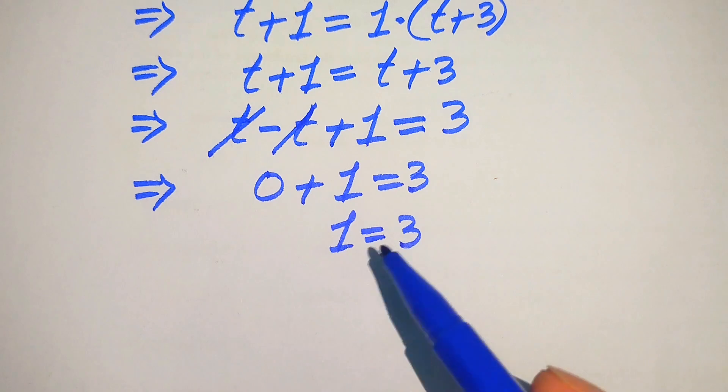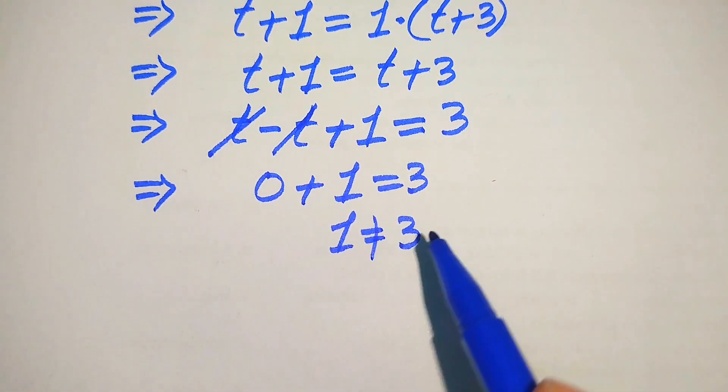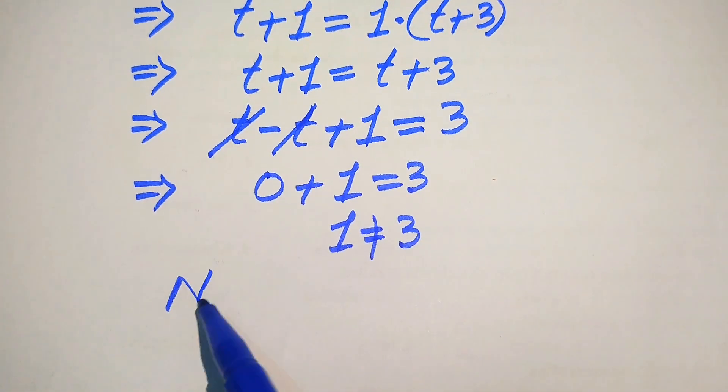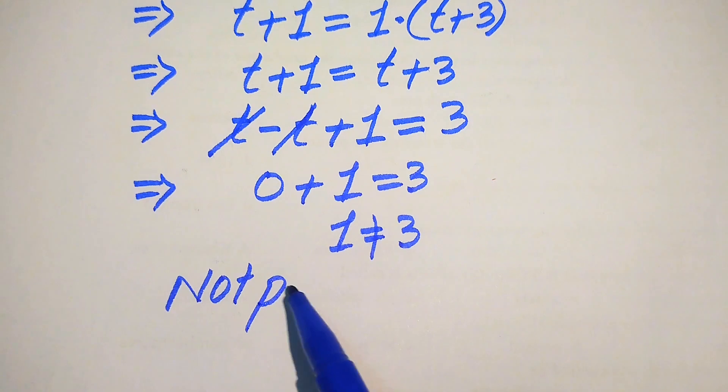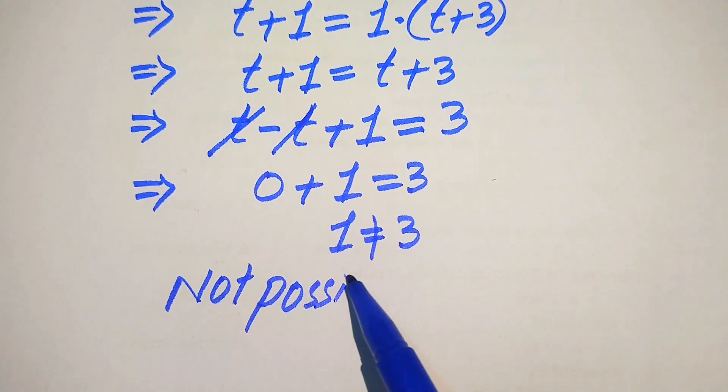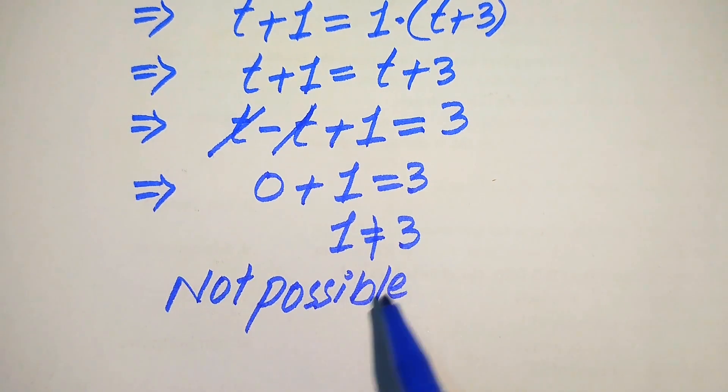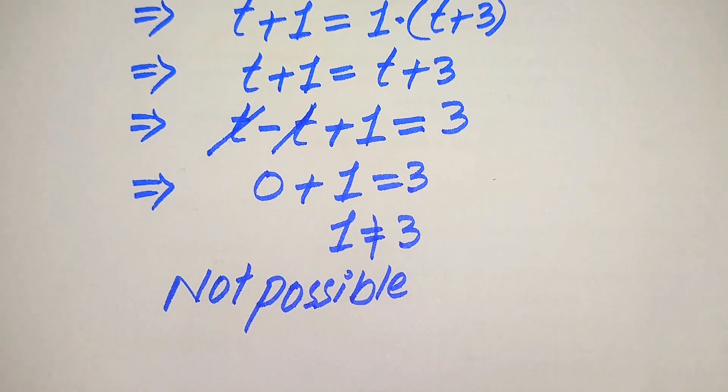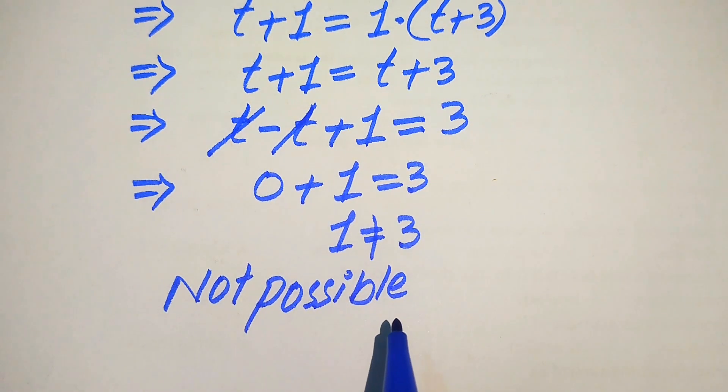Here we generally conclude that 1 is not equal to 3. It is not possible that 1 equals 3.